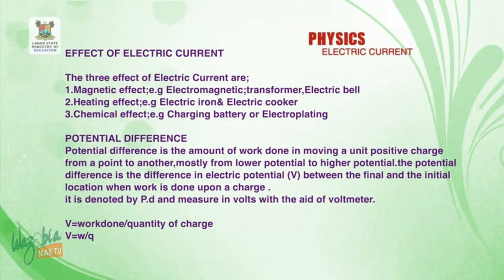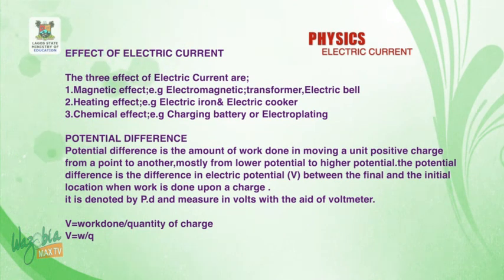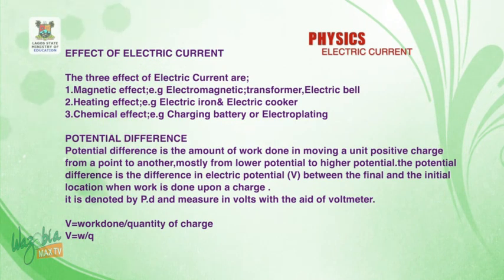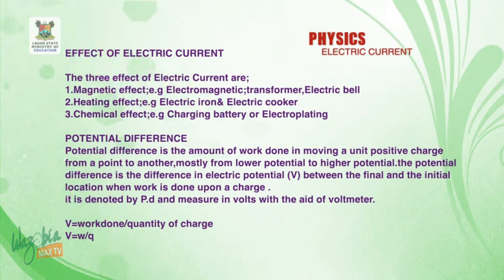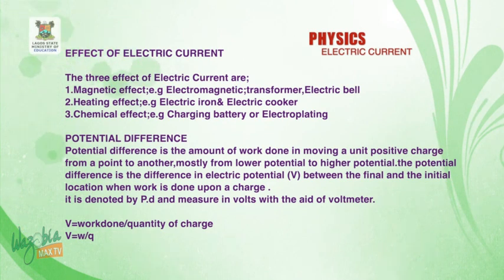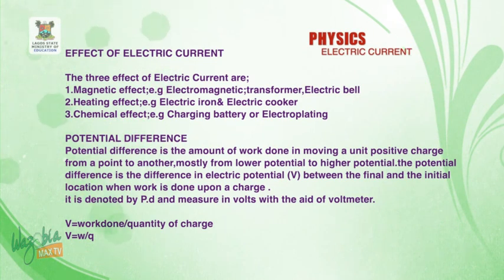Two: heating effect. When you connect your electric iron to electric current, you find out that the thermostat gets the iron hot. Or we are talking about your electric cooker — when you plug it in, it gets hot. Three: chemical effects. When we talk about chemical effects, we are talking about charging the battery, electroplating, or electrolysis. These are the three effects of electric current: magnetic effects, heating effects, and chemical effects.